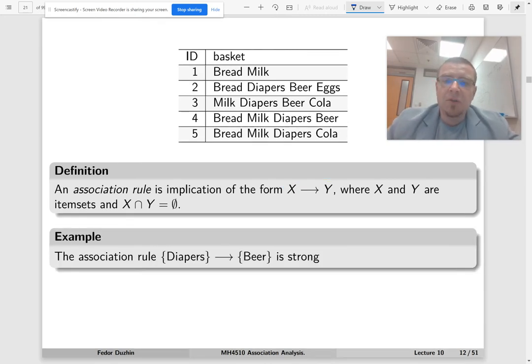The association rule diapers implies beer is a strong rule because if we look at all the itemsets that contain diapers—2, 3, 4, and 5—out of 4, three also contain beer.